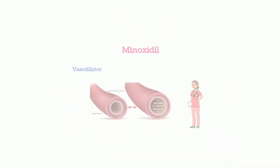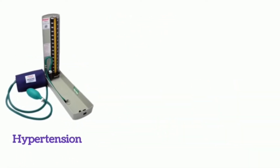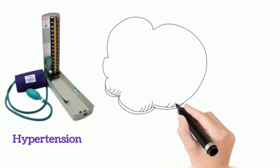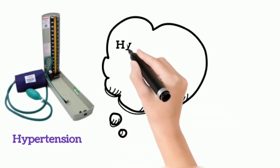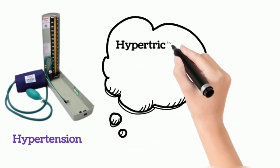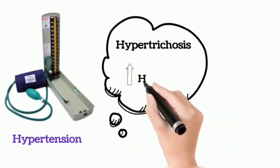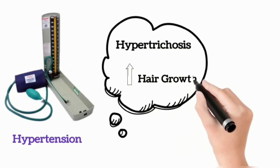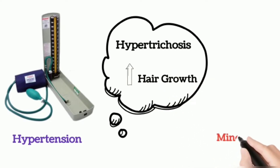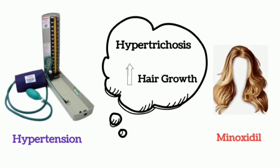In earlier days, minoxidil was used for the treatment of hypertension. But they observed that minoxidil causes hypertrichosis, that is excessive hair growth. So from then onwards, minoxidil is used for the treatment of hair problems.